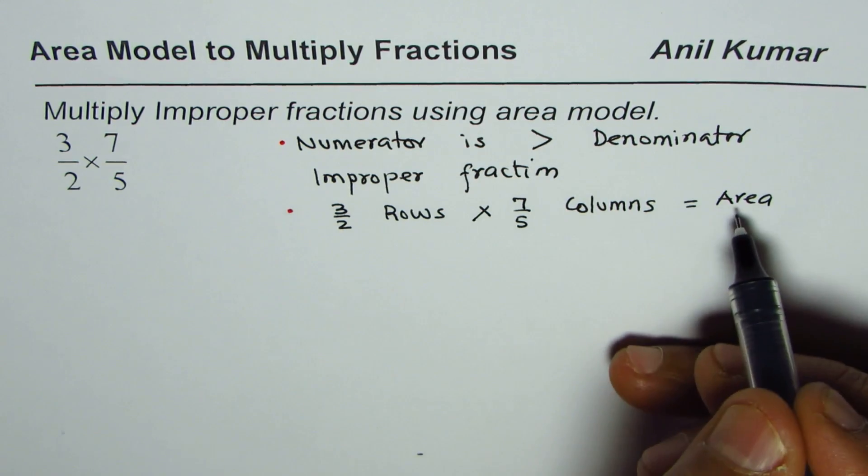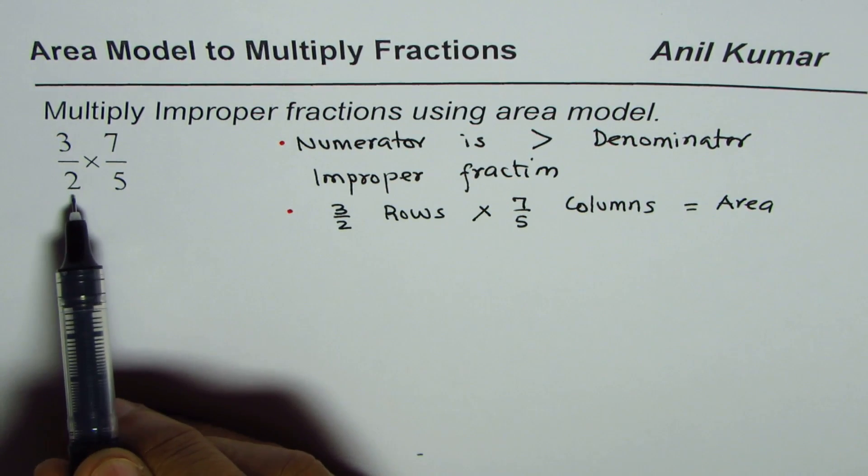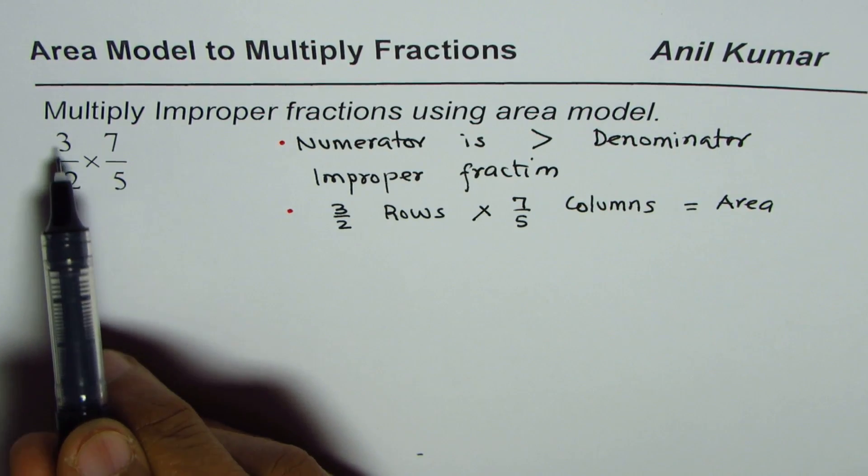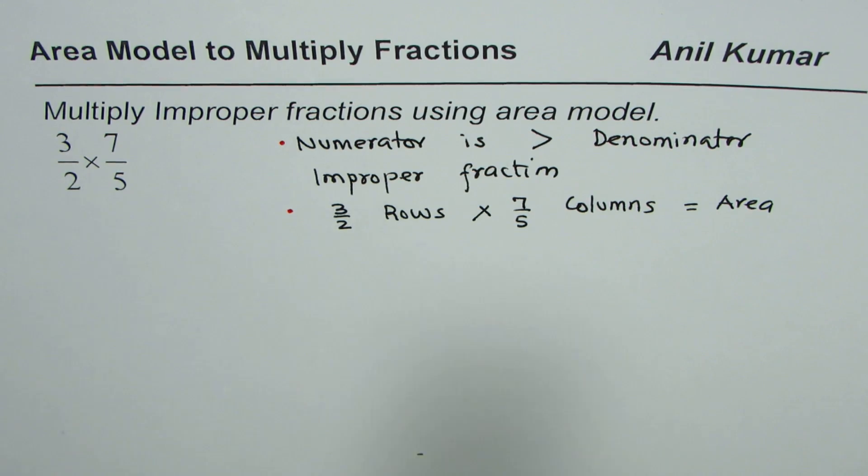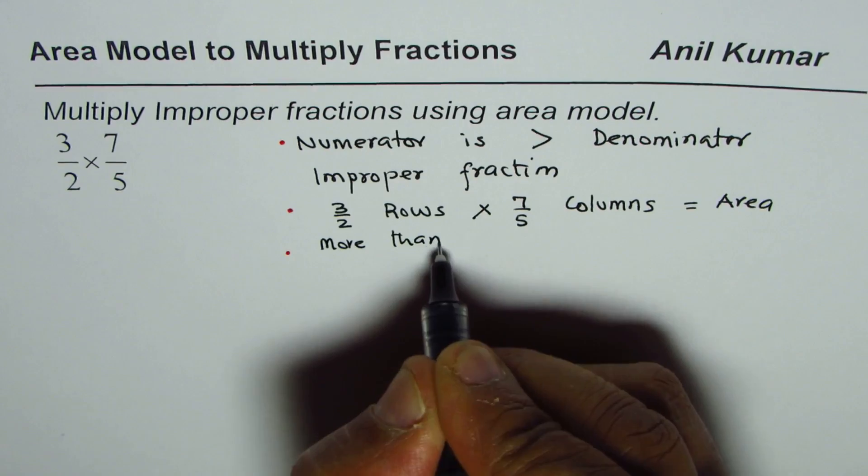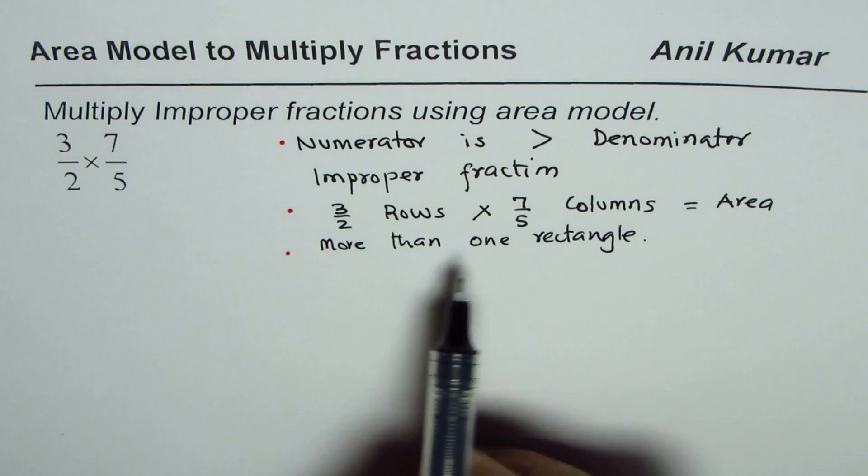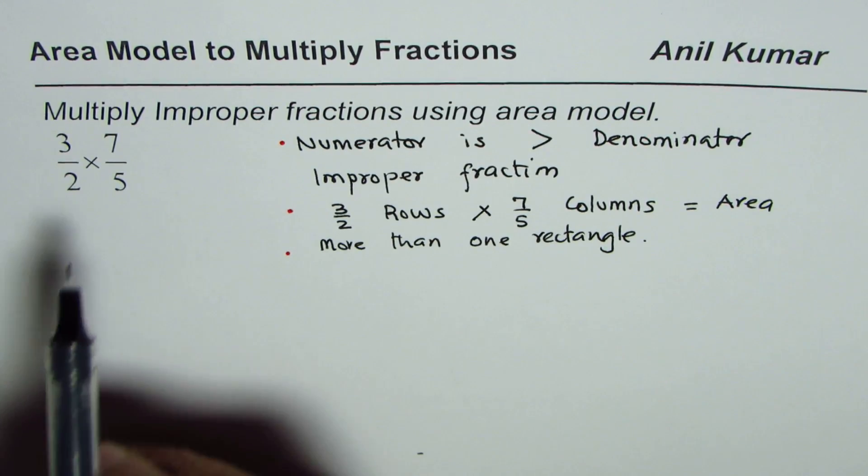Important thing is 3 out of 2 means select 3 out of 2. Can you select 3 rows out of 2 rows? You can't, not from one rectangle. That means we need more than one rectangle.